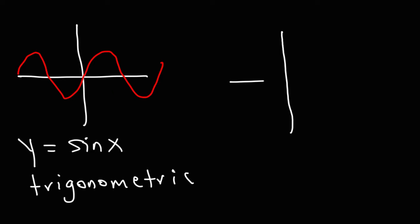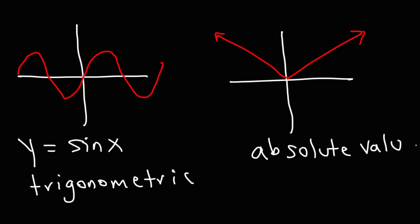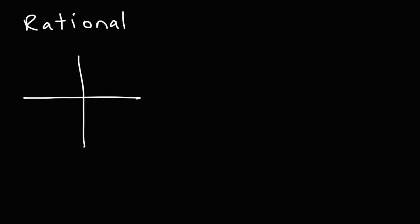We also have an absolute value function — y equals the absolute value of x. Next, we have rational functions, where the degree of the denominator is greater than the degree of the numerator. A good example of a rational function is y equals 1 over x, where you'll typically see a variable in the denominator.